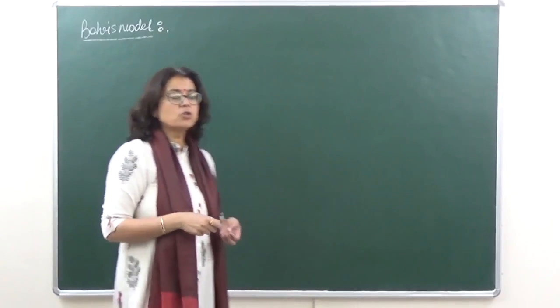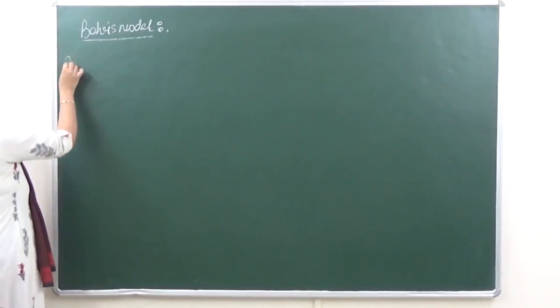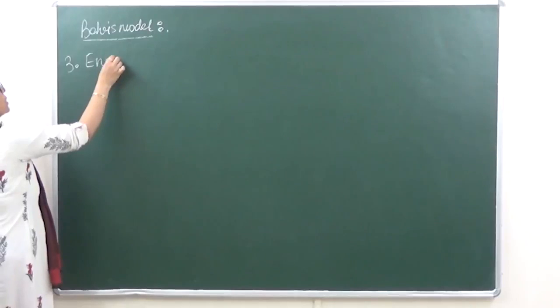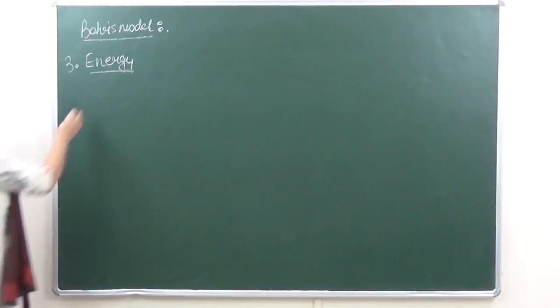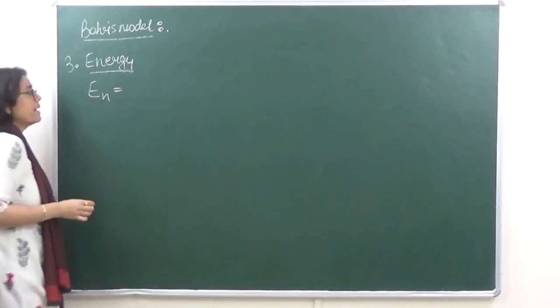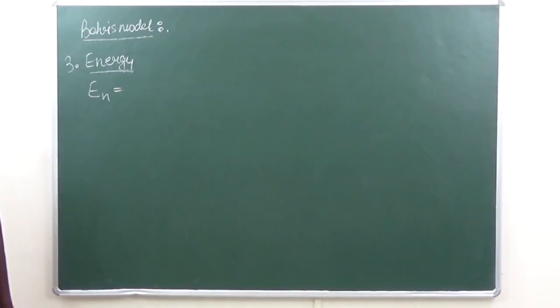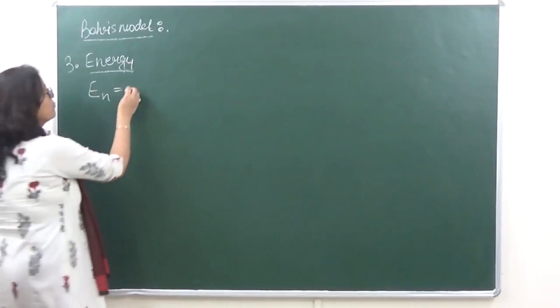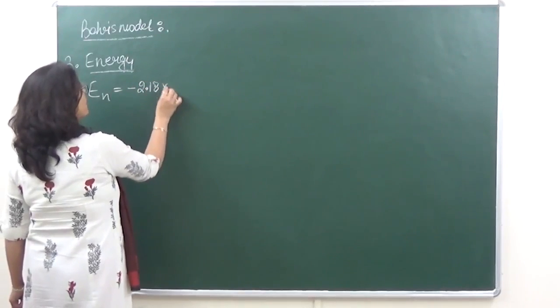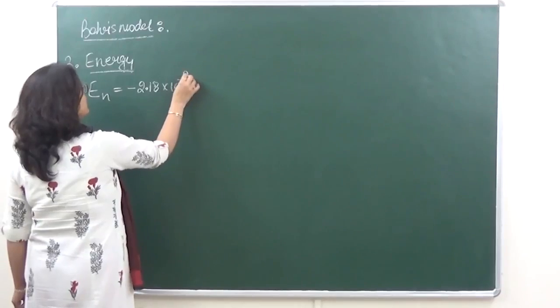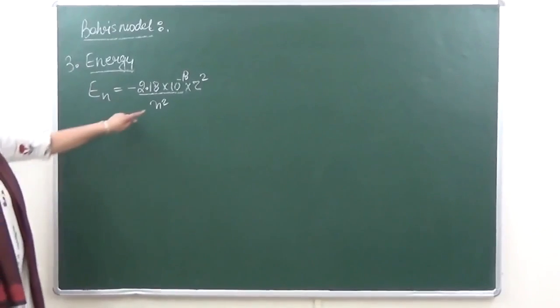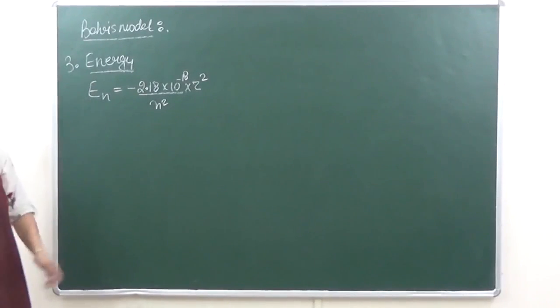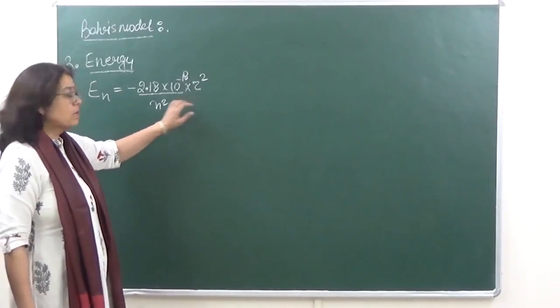So let's look at the formula for these. Let's revise it today. When we are calculating the energy associated with any electron in the nth orbit, it can be given by different values depending upon the unit. The first was minus 2.18 into 10 raised to power minus 18 upon n square into z square, where n is the orbit in which the electron is present, and z that is equal to the atomic number.